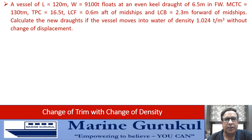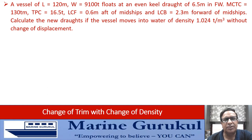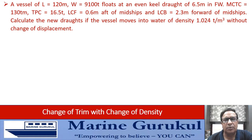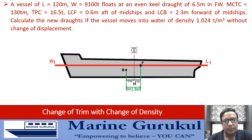Now we take a scenario where hydrostatic particulars remain unchanged throughout the question and we do not have access to a full stability booklet. A vessel of length 120 meters, displacement 9,100 tons, floats at an even keel draft of 6.5 meters in fresh water. MCTC 130 ton-meters, TPC 16.5 tons, LCF 0.6 meters aft of midships, LCB 2.3 meters forward of midships. Calculate the new drafts if the vessel moves into water of density 1.024 without change of displacement.